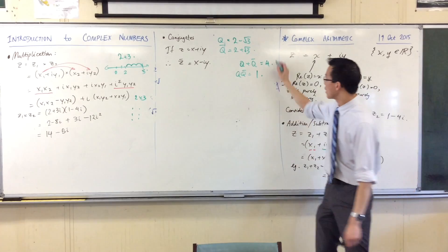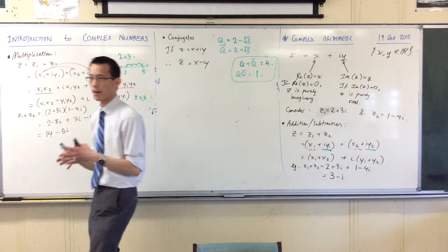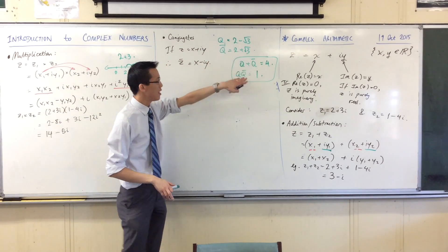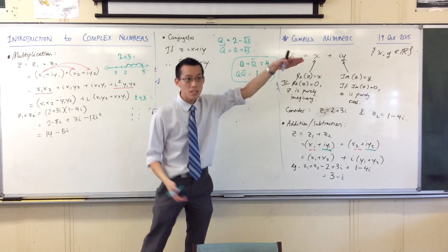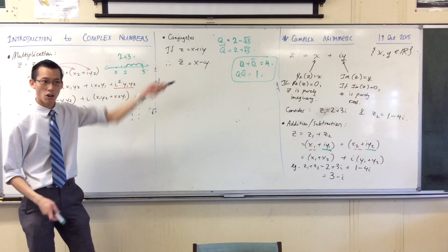So what you want to notice is when you add or multiply, the sum or product of a number and its conjugate when you've got irrational stuff, the sum and product are both rational. Do you notice that? The irrational parts just disappear. So therefore, what do you expect to happen with complex conjugates?